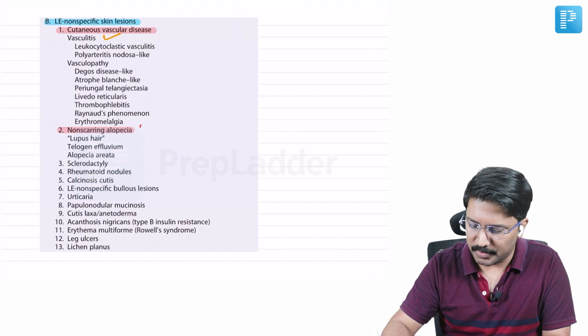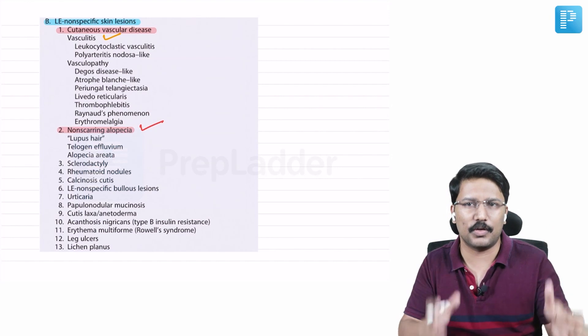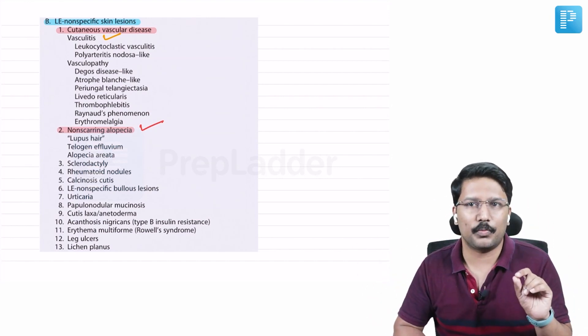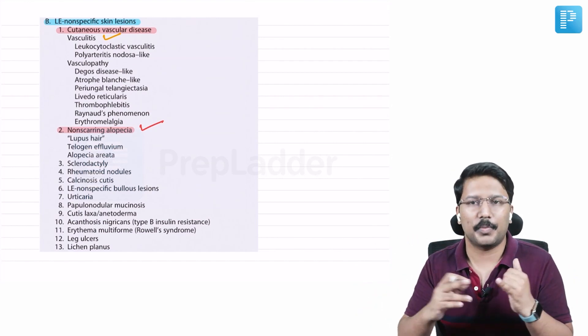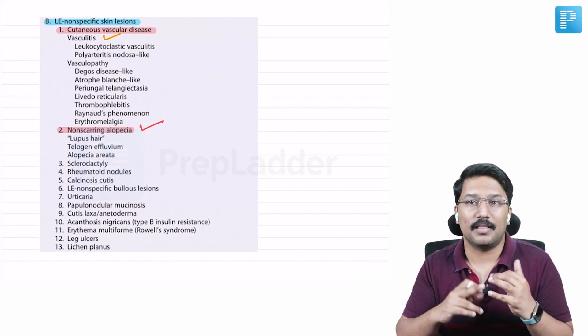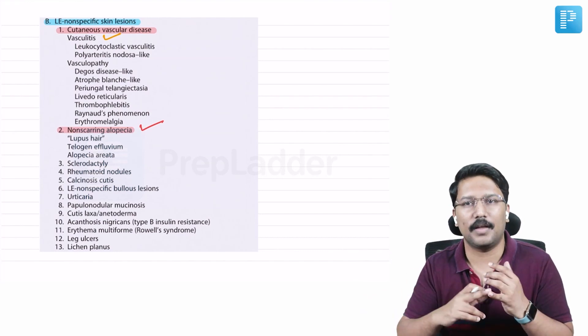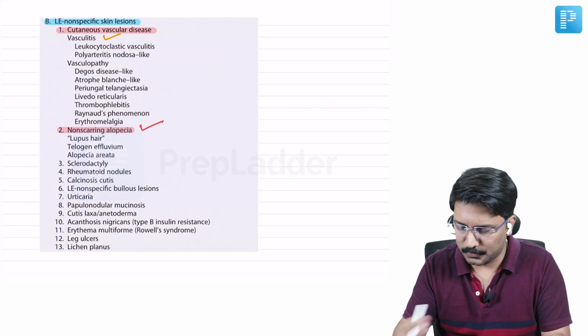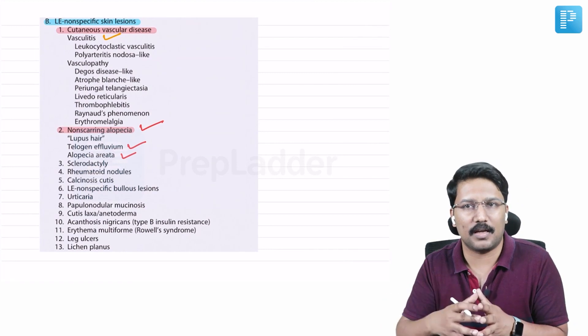Then again, I particularly want you to remember this non-scarring alopecia. So normally when we talk about SLE, we all remember discoid lupus erythematosus, scarring alopecia. But non-scarring alopecia is equally common or in fact more common. So patients with lupus erythematosus are very much prone to develop telogen effluvium. They are also prone to develop alopecia areata. So there is a strong correlation between alopecia areata and lupus erythematosus. So telogen effluvium can occur, alopecia areata can occur, and there is also something called as lupus hair.